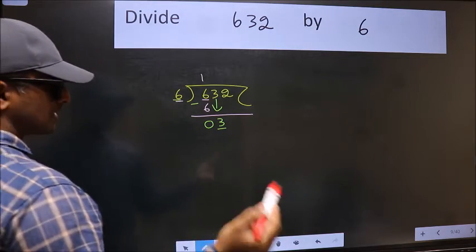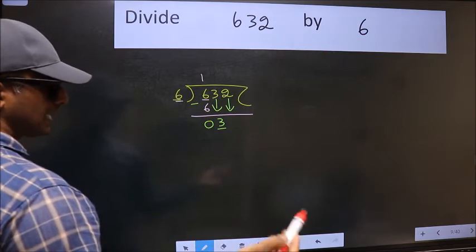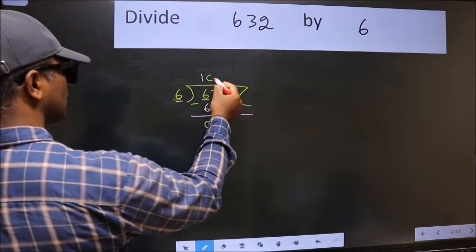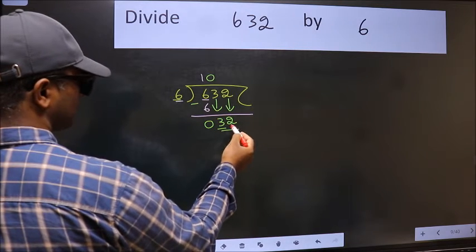So we should bring down the second number. And the rule to bring down second number is we should put 0 here. Then only we can bring this number down. Now 32.